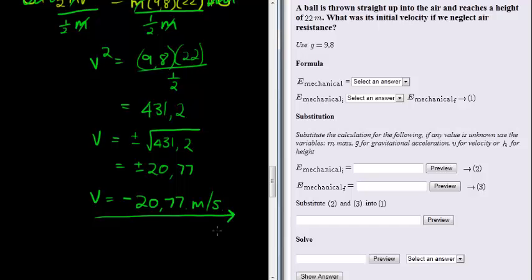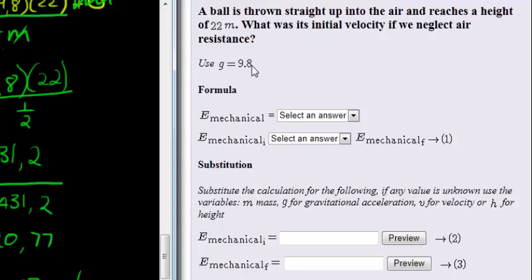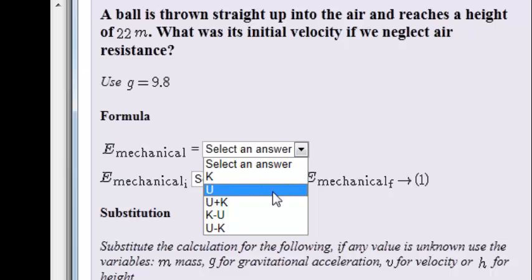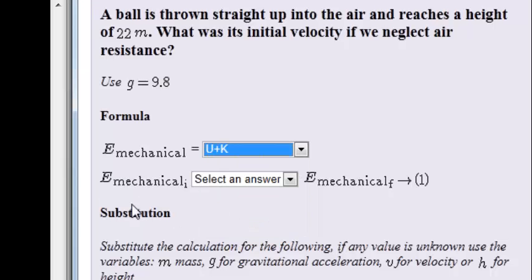That's the velocity, the initial velocity. Let's go fill it out. Here we see that mechanical energy, the formula, is equal to potential energy plus kinetic energy. And here, what is the relationship between mechanical energy initial and mechanical energy final? Well, they are equal to each other.